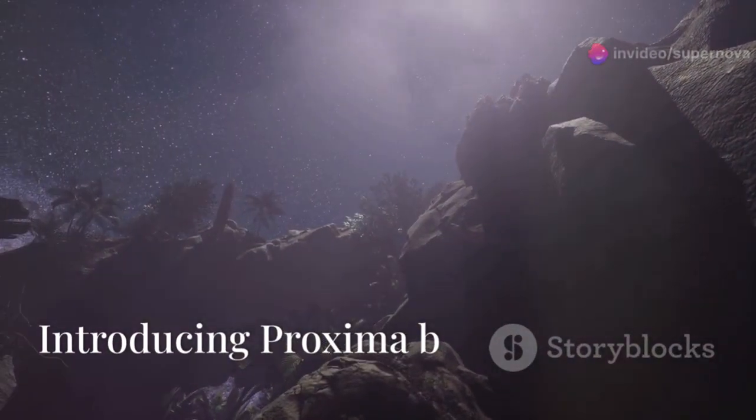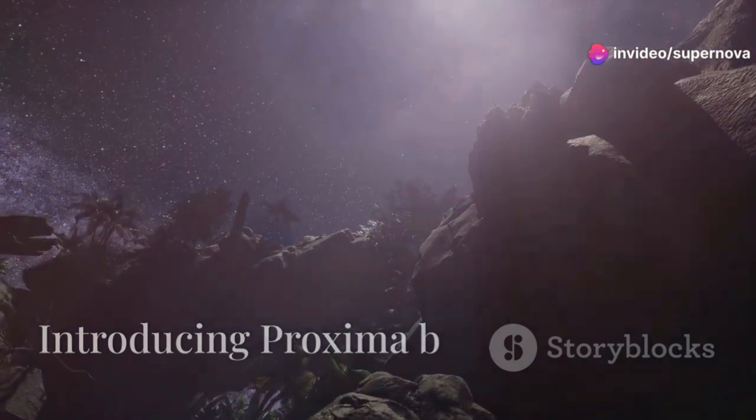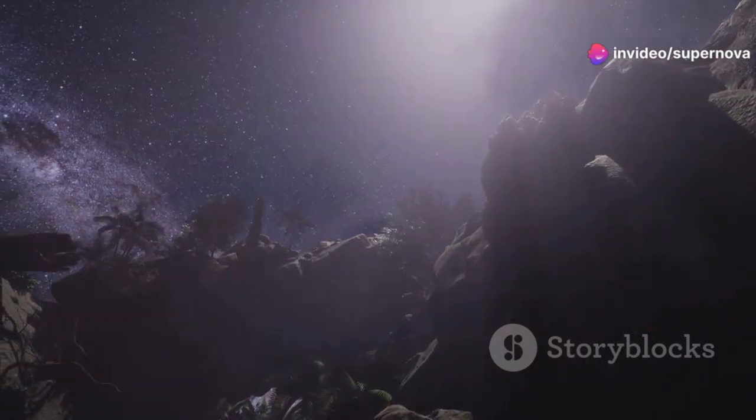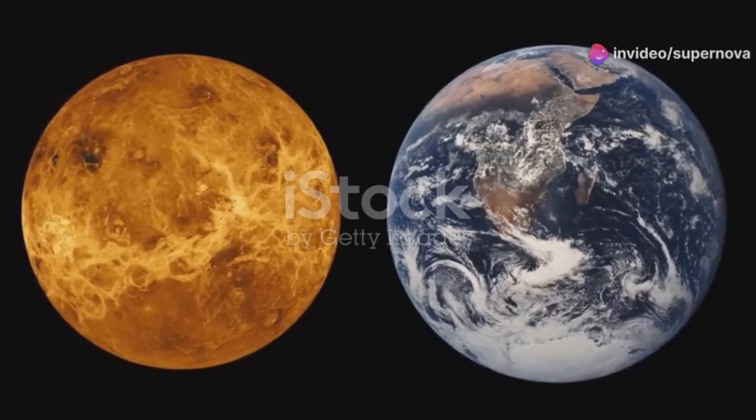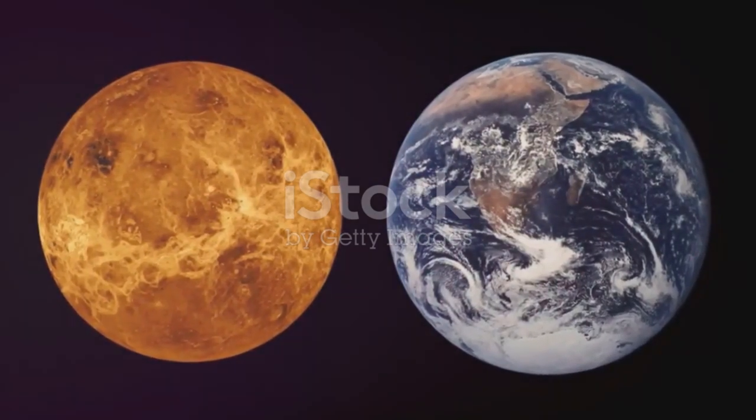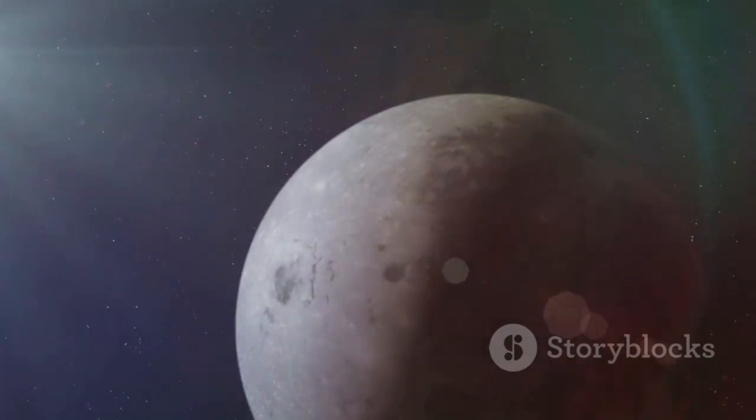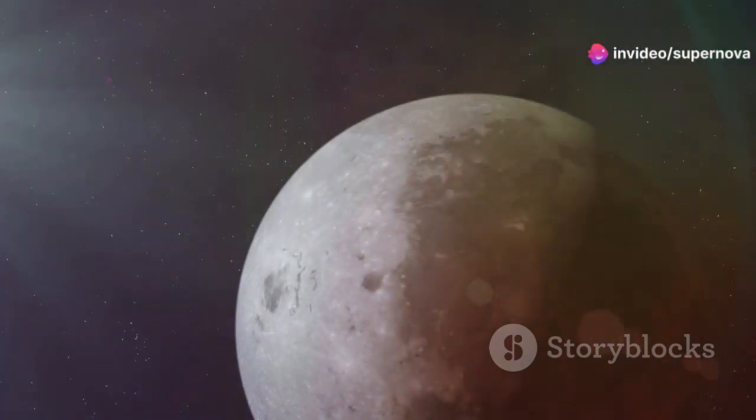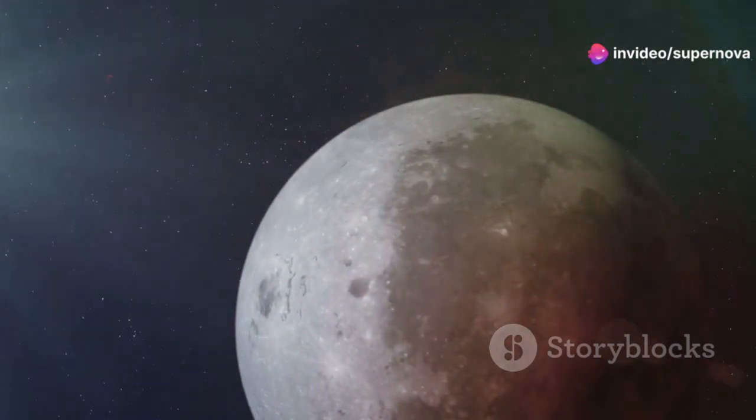Proxima b is a fascinating world, capturing the imagination of scientists and space enthusiasts alike. It is slightly larger than Earth, about 1.3 times its mass, making it a super Earth. This classification means it has a greater mass than Earth, but is not as massive as the larger gas giants in our solar system.